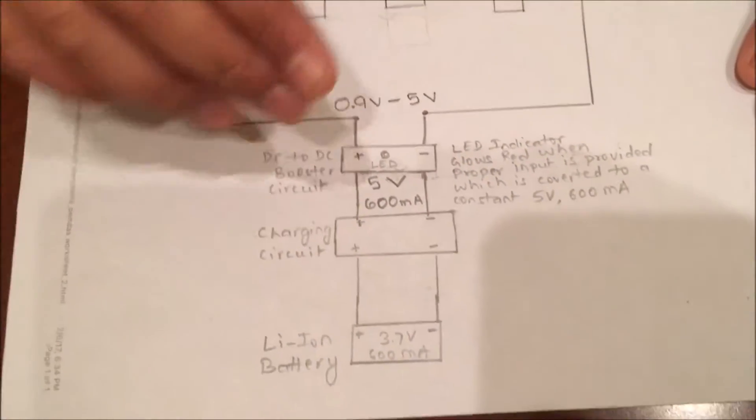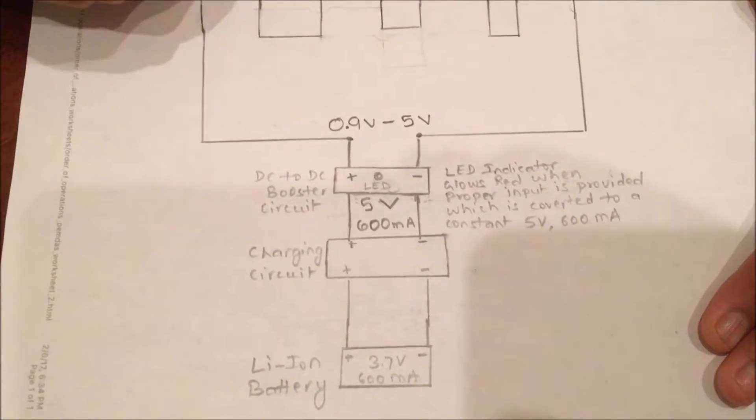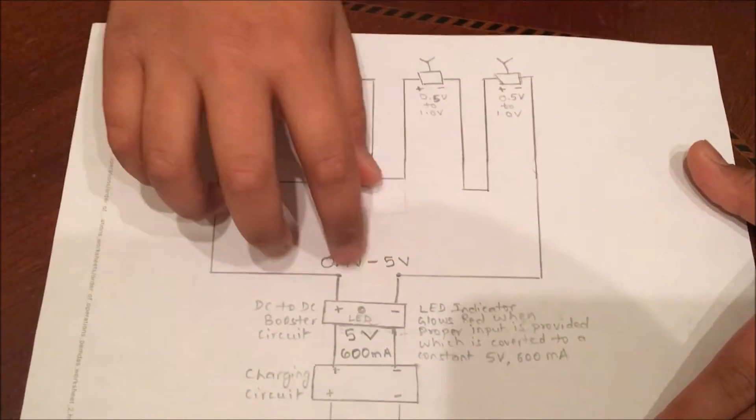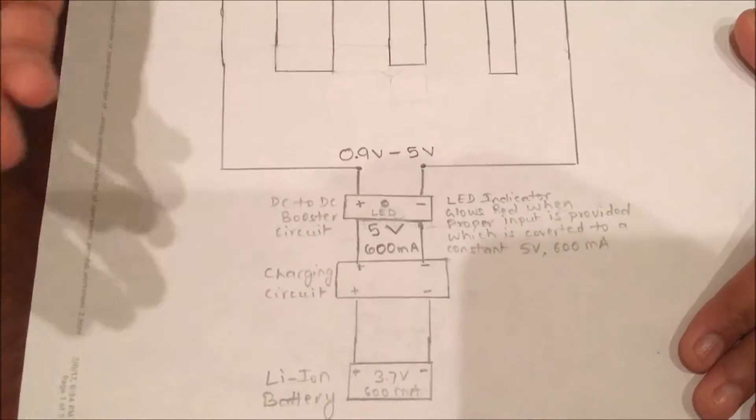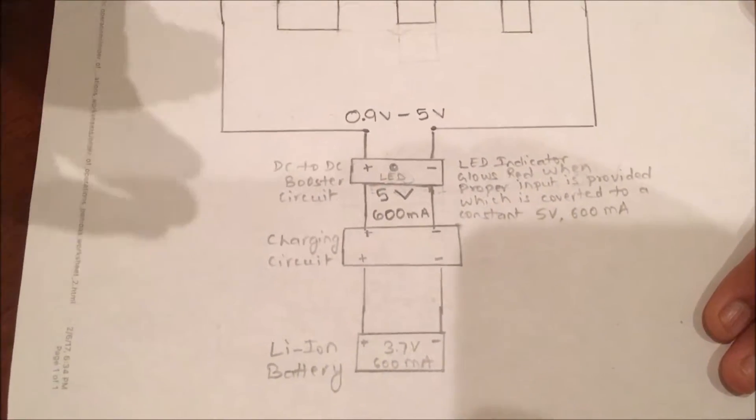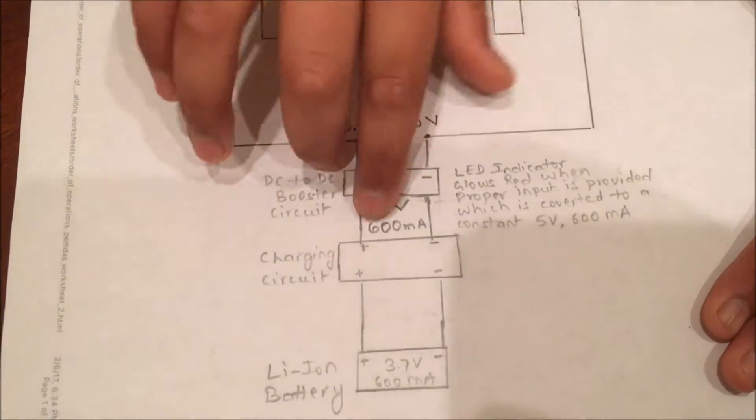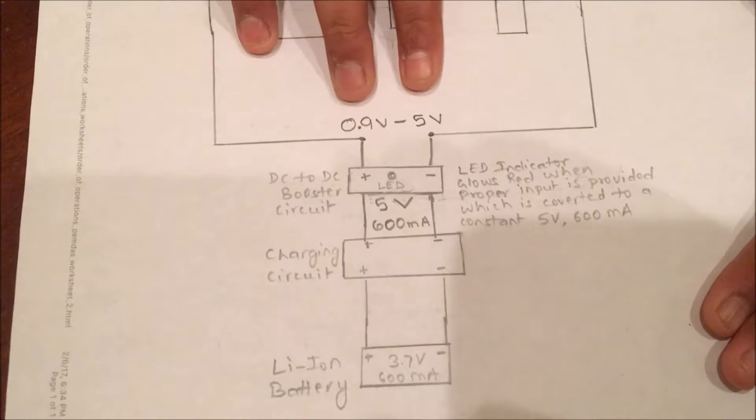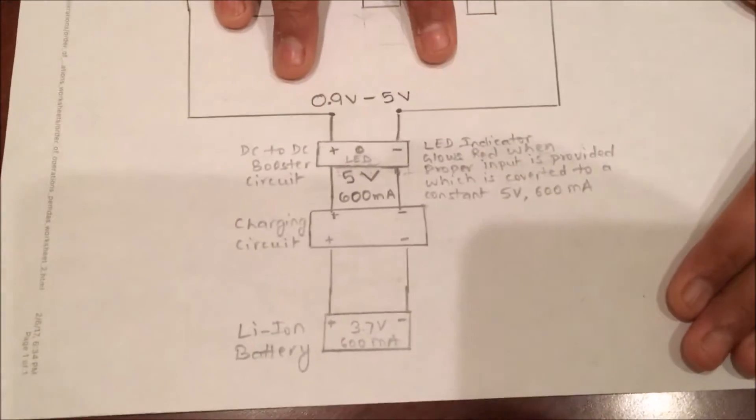The job of this circuit is to convert the voltage provided by these motors and provide a constant voltage of 5 volts and a constant current of 600 milliamps. This can convert it to this if you give it a range of 0.9 volts to 5 volts.